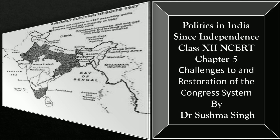Half the ministers in Indira Gandhi's cabinet were defeated. The political stalwarts who lost in their constituencies included Kamaraj in Tamil Nadu, S.K. Patil in Maharashtra, Atulya Ghosh in West Bengal, and K.B. Sahay in Bihar. The dramatic nature of the political change was more apparent at the state level. The Congress lost majority in as many as seven states. In two other states, defections prevented it from forming a government. These nine states where the Congress lost power were spread across the country: Punjab, Haryana, Uttar Pradesh, Madhya Pradesh, Bihar, West Bengal, Orissa, Madras, and Kerala.